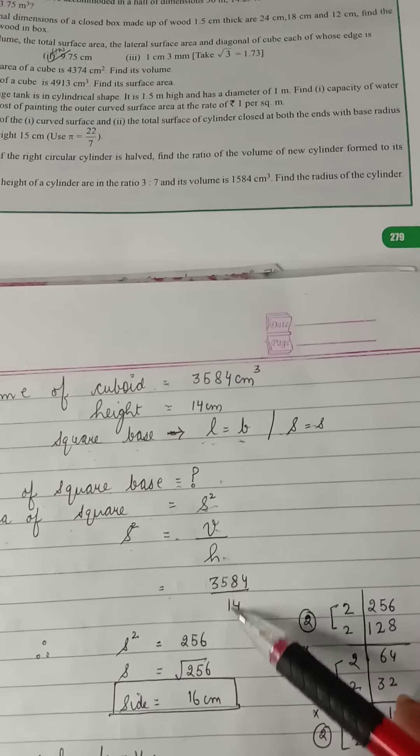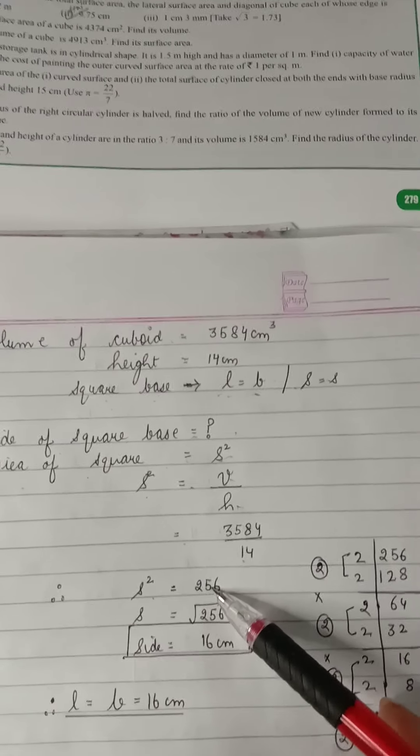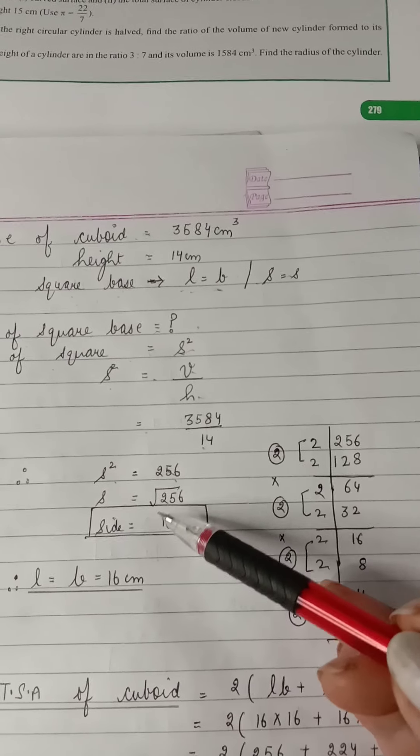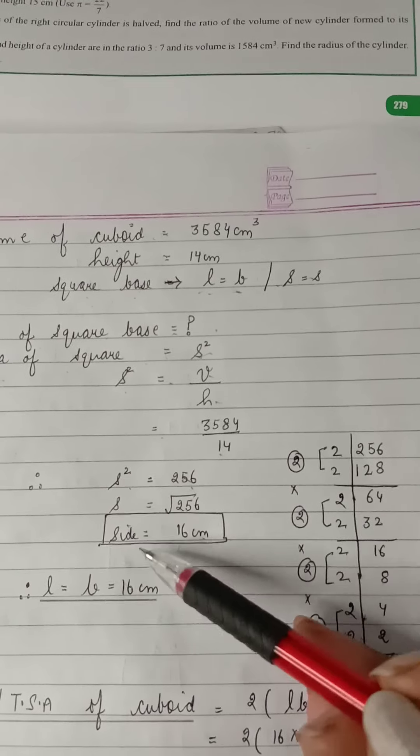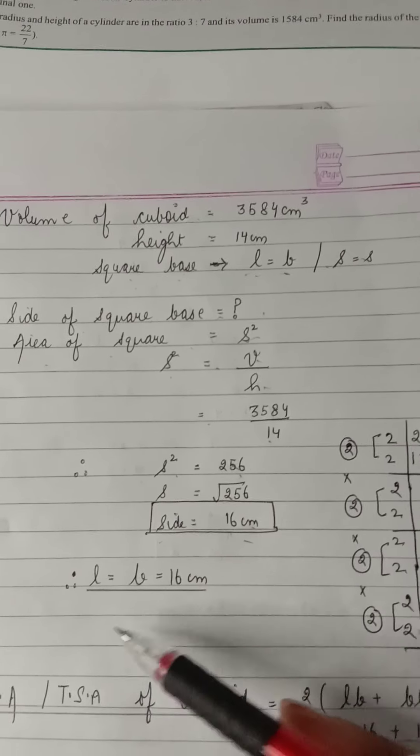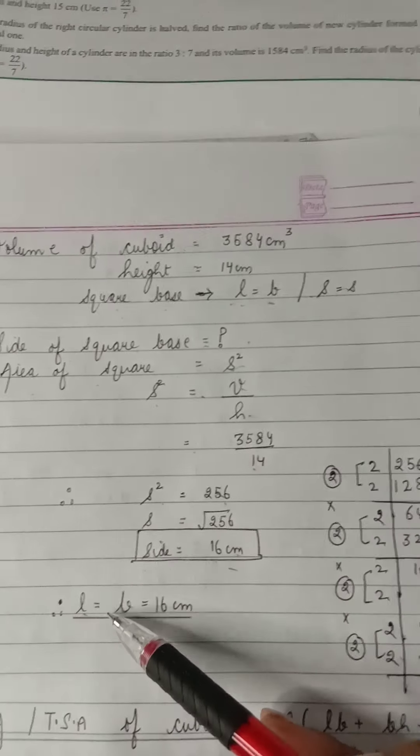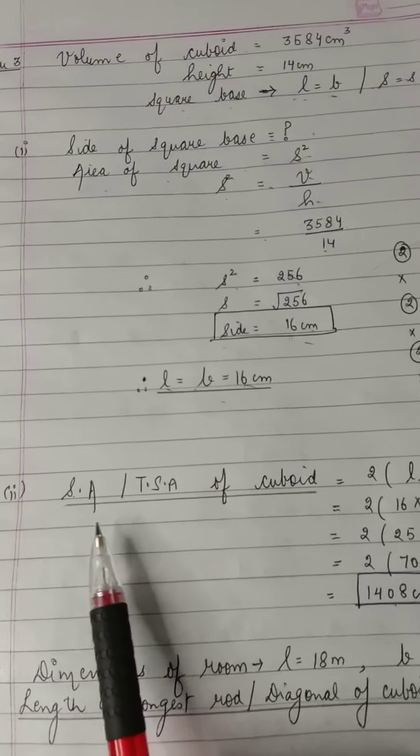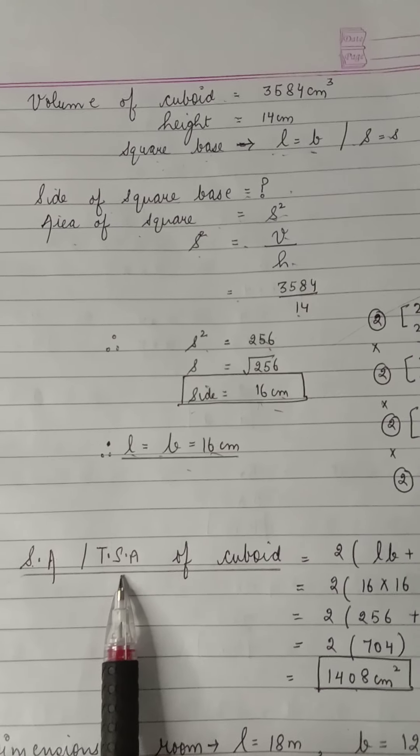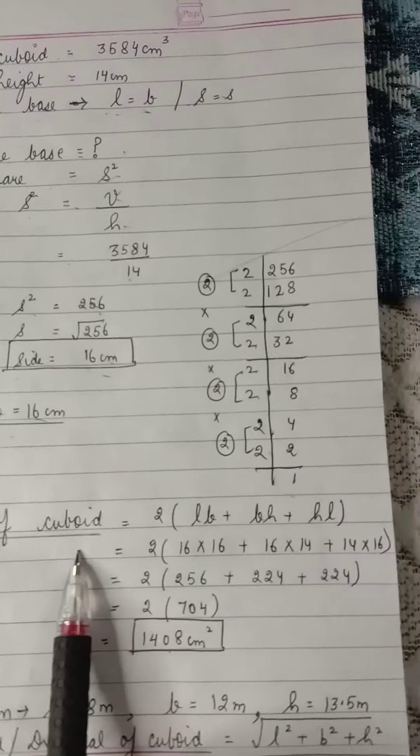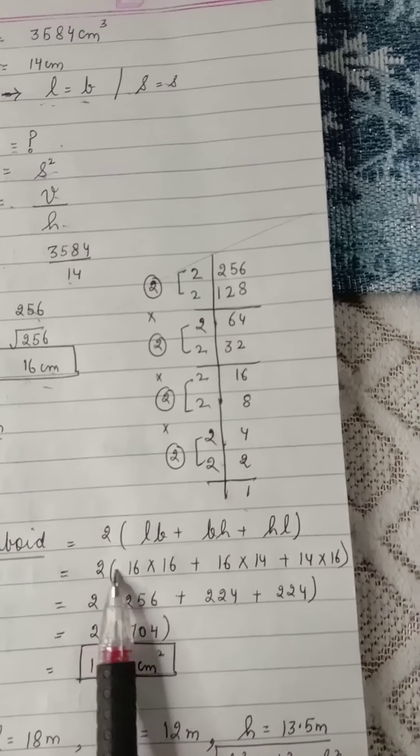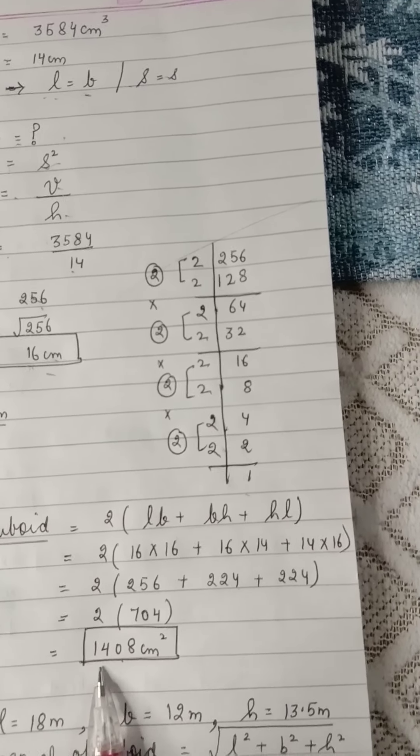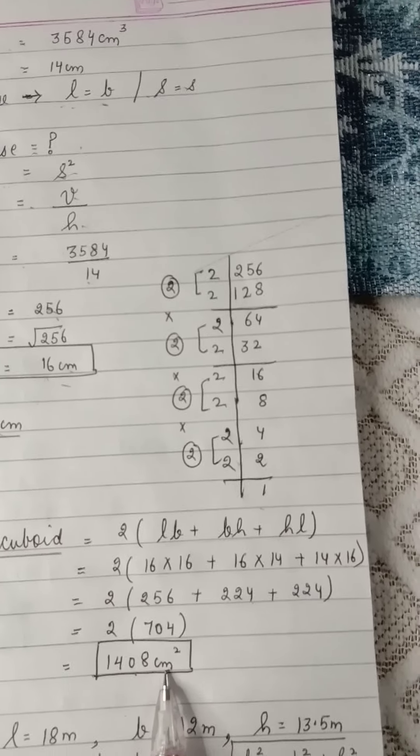Now find the square root of 256. That's how we find out the square root, and the square root comes as 16 centimeters. So the side of cuboid is 16 centimeters. So we can say length equals to breadth equals to 16 centimeters. Next, we have to find the second part. We have to find the surface area, or we can say total surface area. It's one and the same thing of cuboid. Write down the formula. Now putting the values in the formula, that's what we get, and the final answer is 1408 centimeter square.